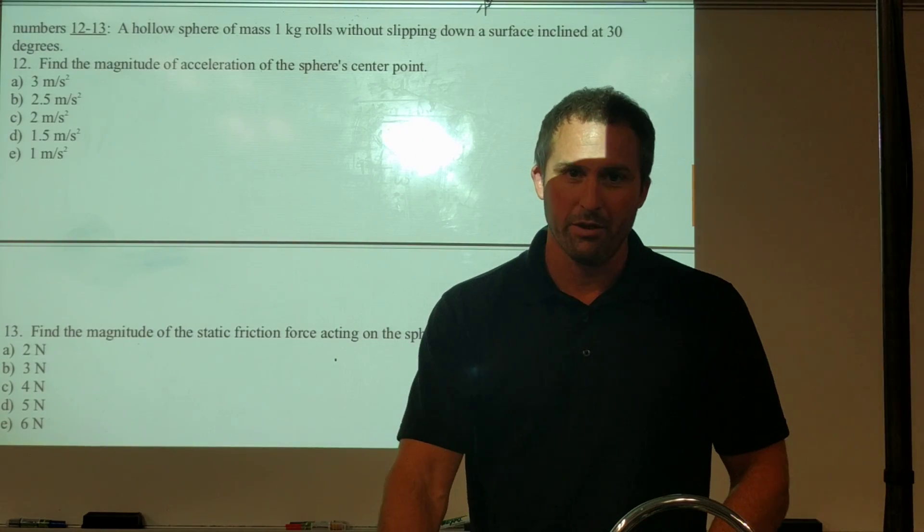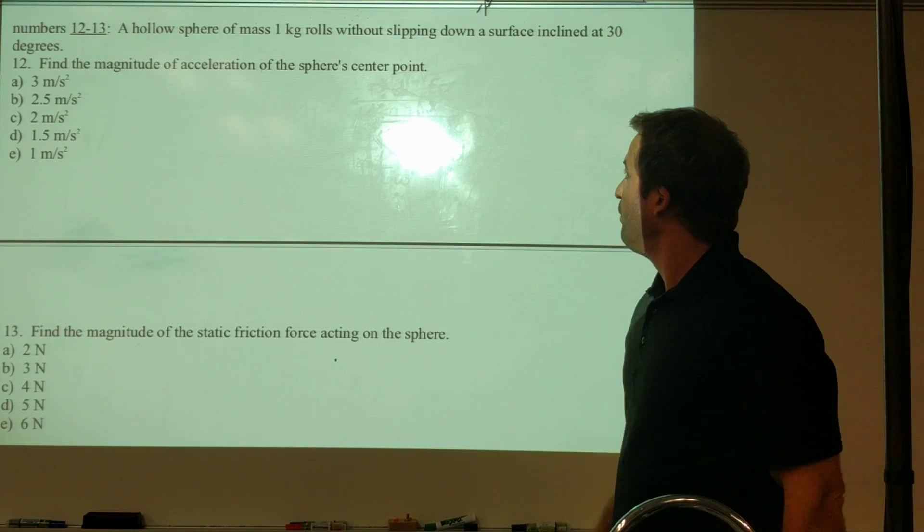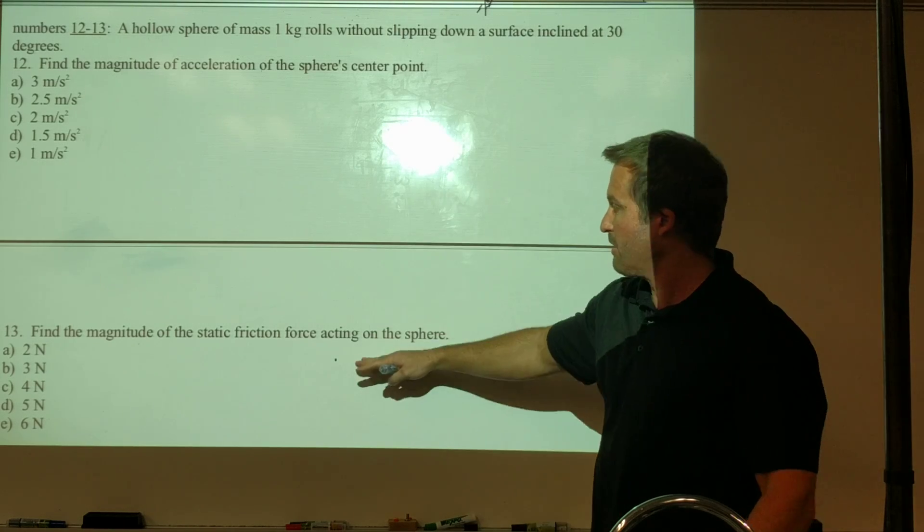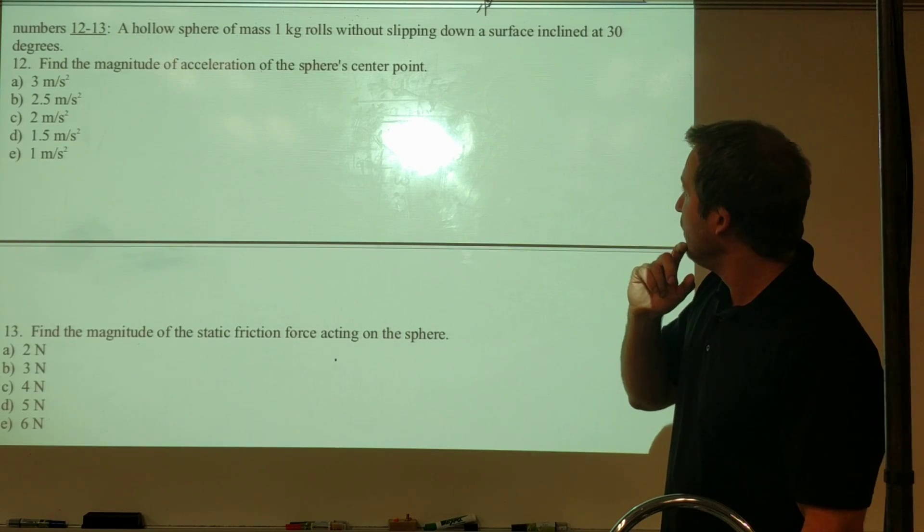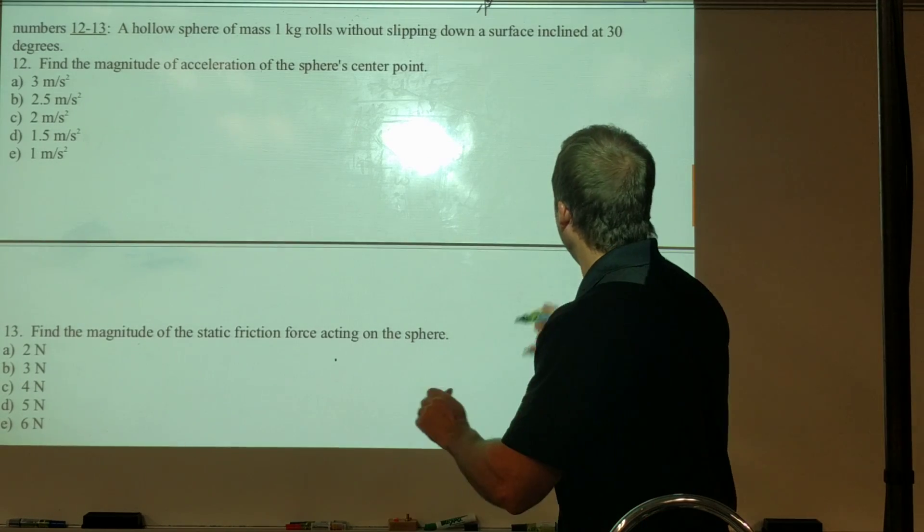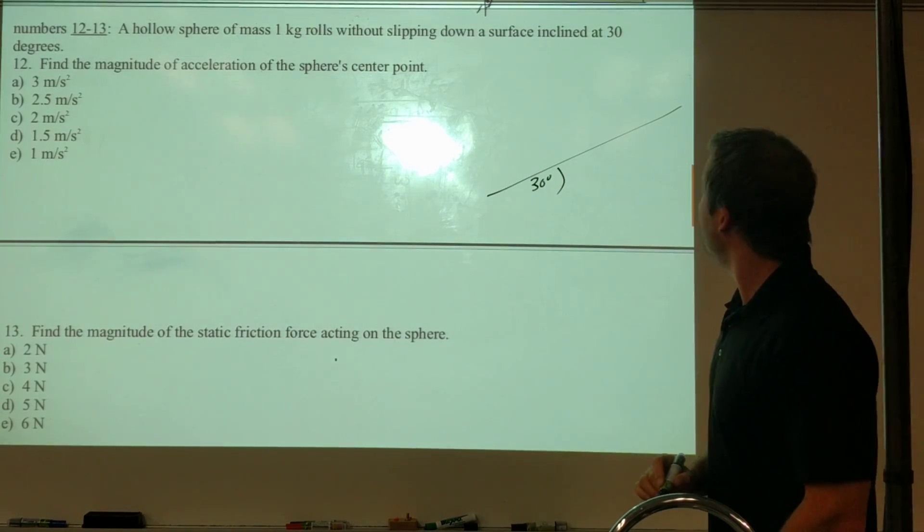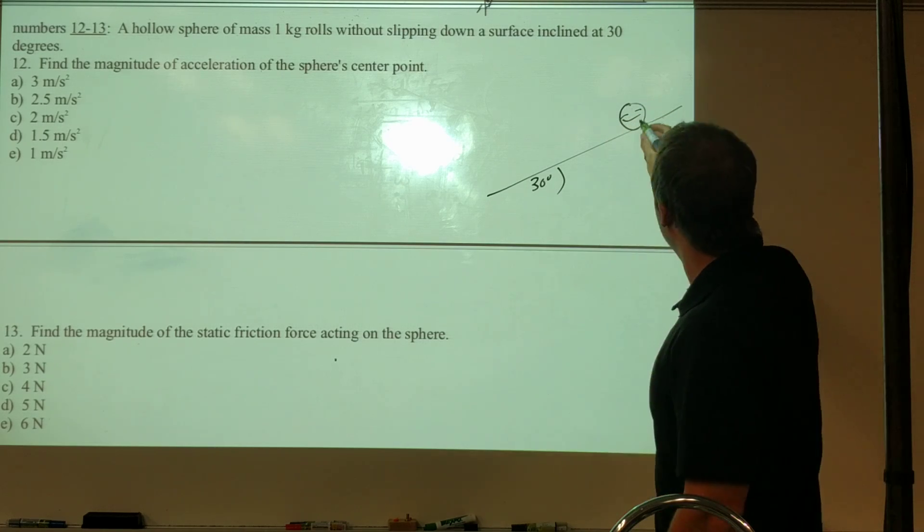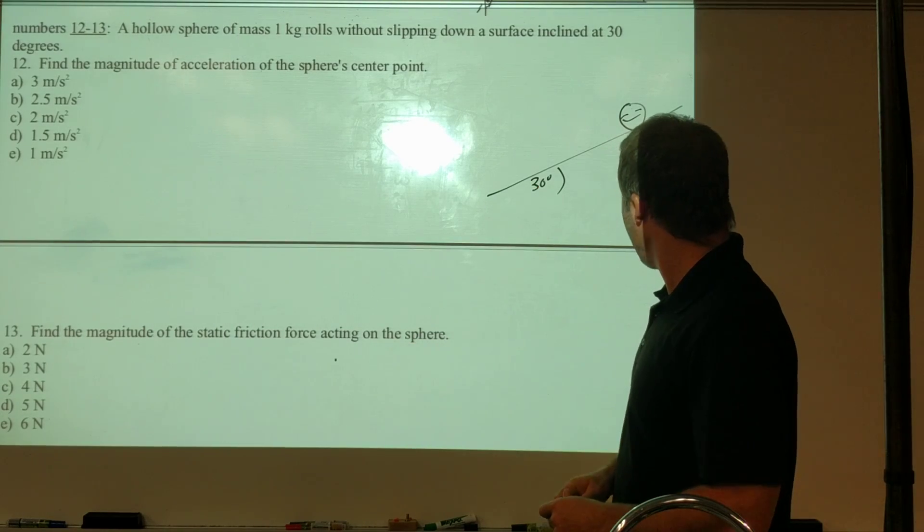Let's take a look at numbers 12 and 13 that go together. We've got a hollow sphere that rolls without slipping down an inclined surface at 30 degrees, and we want to find both the acceleration and the magnitude of the static friction force. Let me draw a picture here with the 30 degree angle and our hollow sphere rolling without slipping.